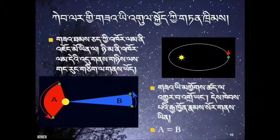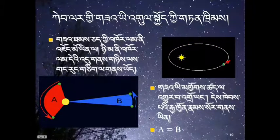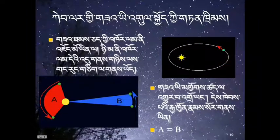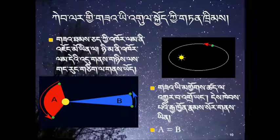As a result of these laws, Kepler's theory was much more precise than either Copernicus or Ptolemy's. It made exceptionally accurate predictions about the position of the planets in the night sky.